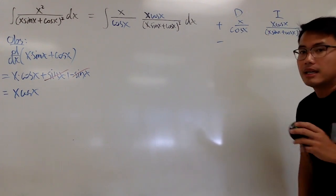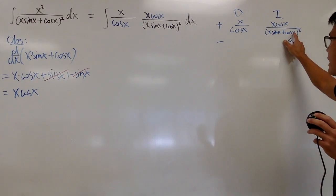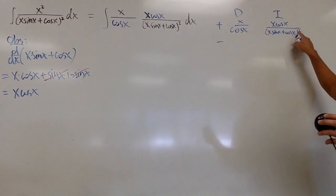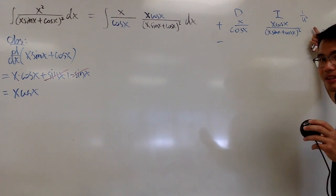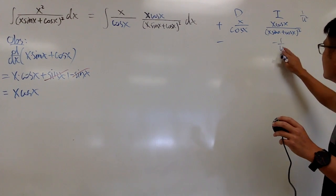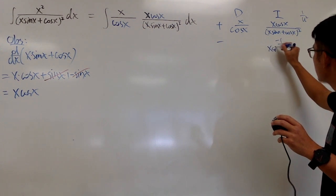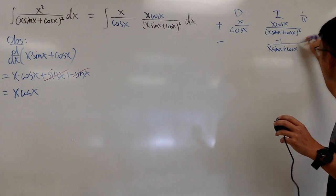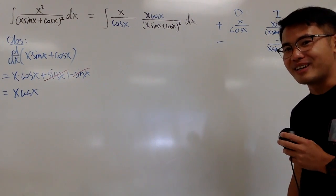To integrate x cos x over (x sin x + cos x) squared, I do a simple u-substitution: let u equal the inside, then du will be x cos x dx, which is the top. In other words, we are integrating 1 over u squared. When you integrate that, the answer is negative 1 over u. So this is negative 1 over (x sin x + cos x). If you differentiate that you will get it back.